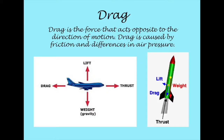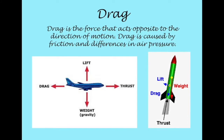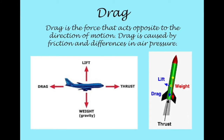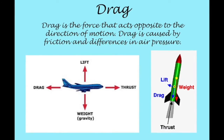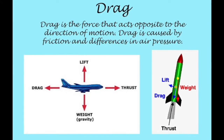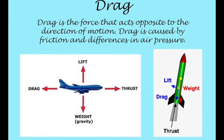Drag is one of the four forces of flight. Drag is the force that acts opposite to the direction of motion. It is caused by friction and differences in air pressure. Although drag is present in both planes and rockets, it is also present in all objects because it is generated by the interaction and contact of a solid body with a fluid, which is a liquid or a gas.